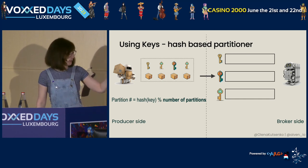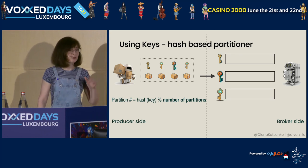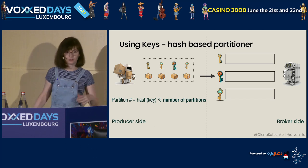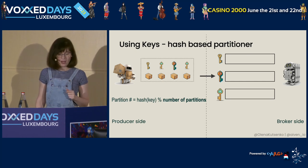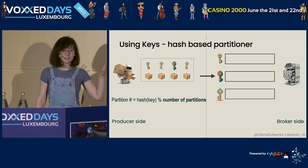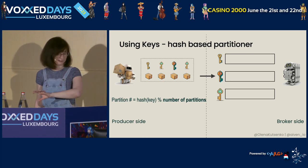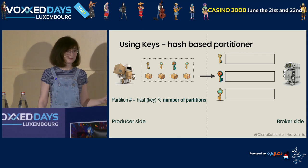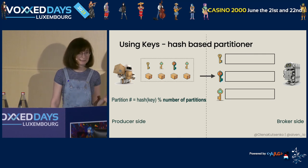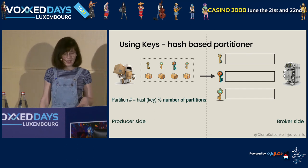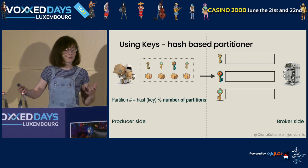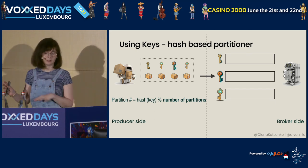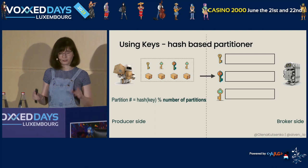Now let's think about what happens in that formula when we add extra partitions to our topic while using keys. Coming back to why it's not so easy to add extra partitions: if you are relying on keys for record ordering, once you increase the number of partitions, the resulting partition number per key will now be different. So you've ruined all the logic of where the data should go. That's why it's not straightforward to add extra partitions — not impossible, but we'll see a code snippet on how to do it with a custom partitioner later.